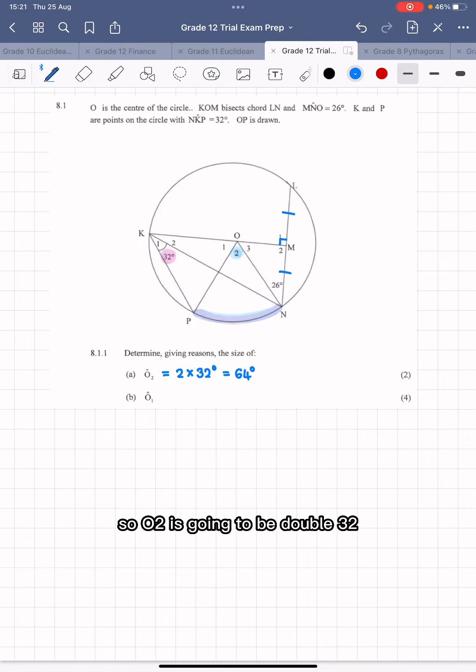So O2 is going to be double 32, which is 64 degrees, and your reason is going to be angle at center equals two times angle at circumference. That is a very long reason. Unfortunately, we have to write the whole thing out every time we use it.